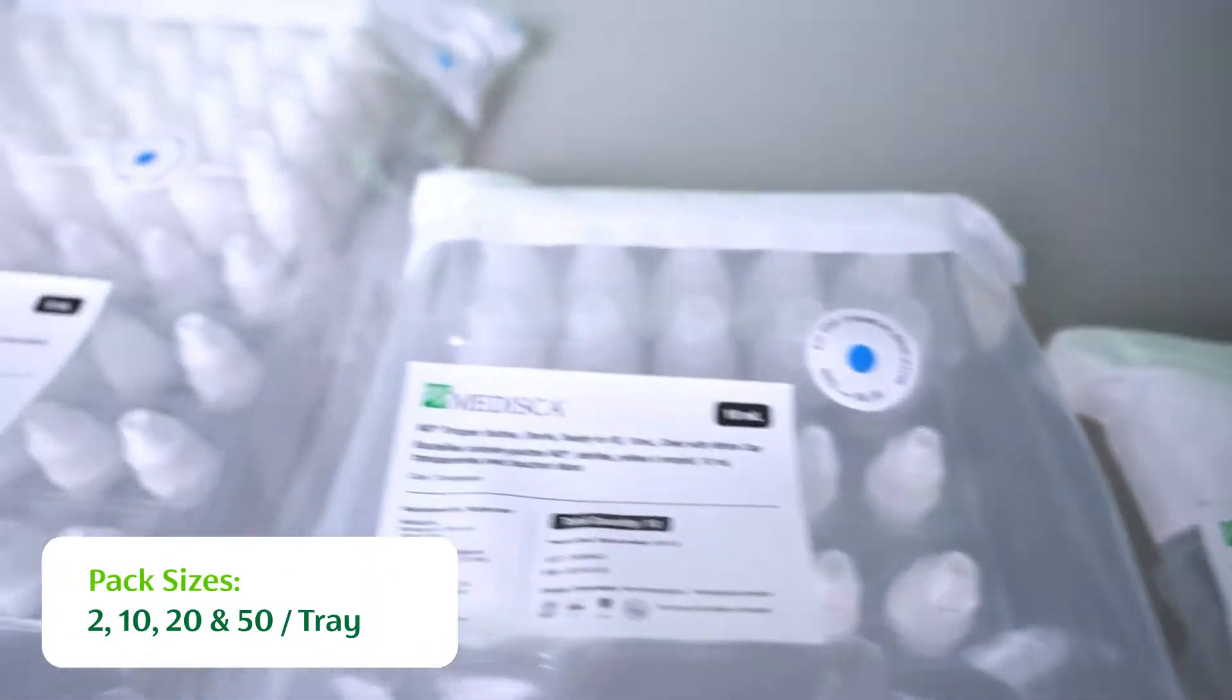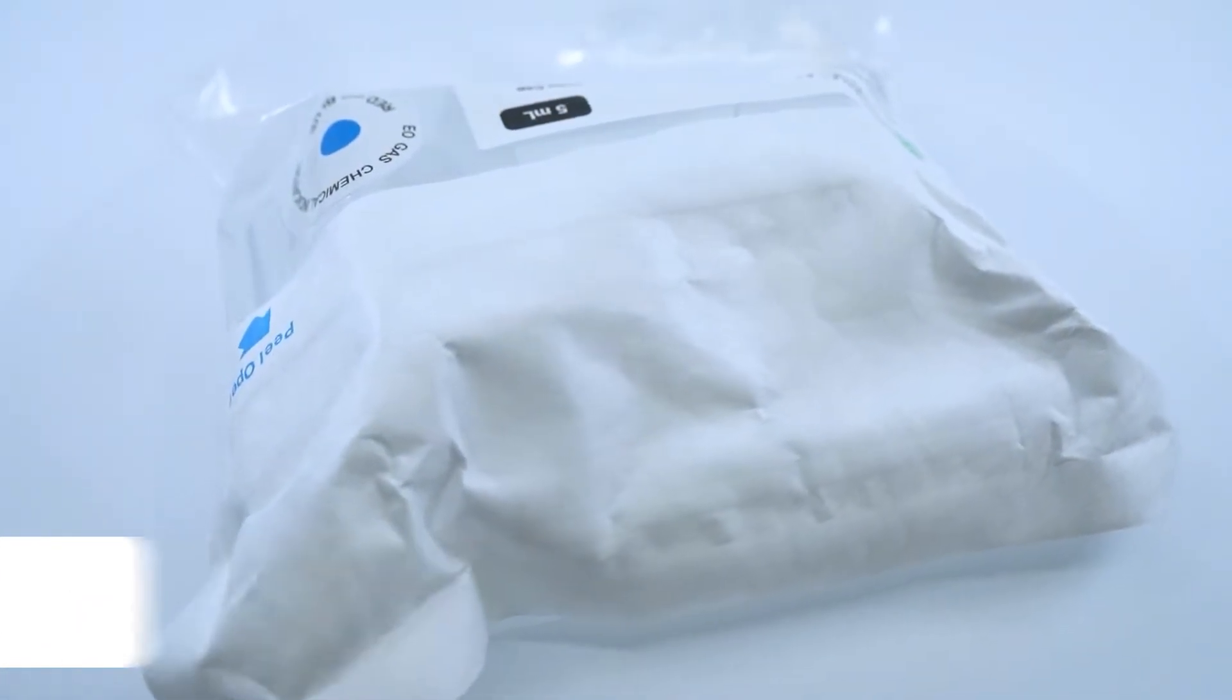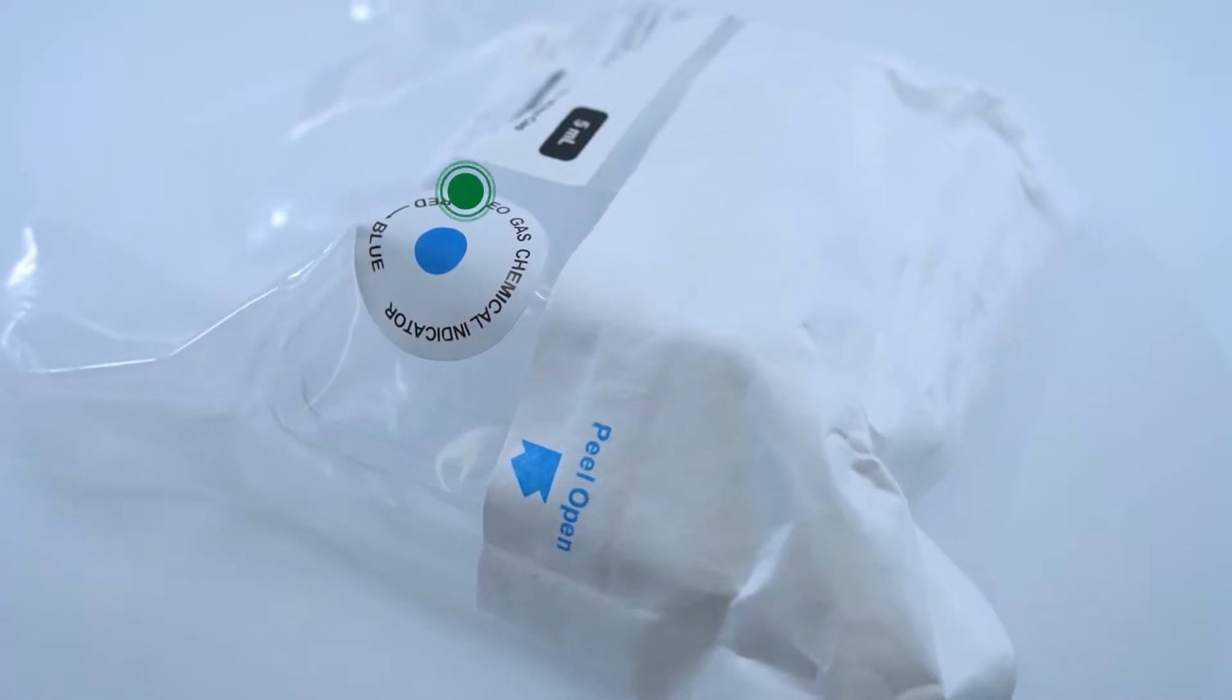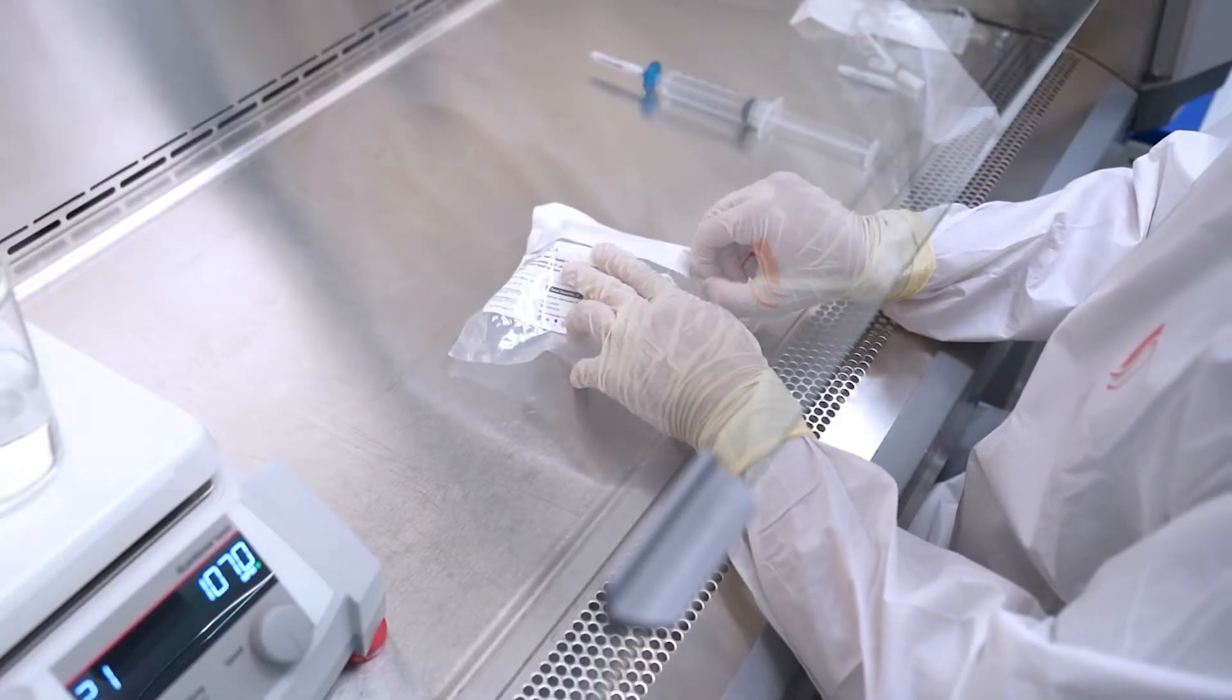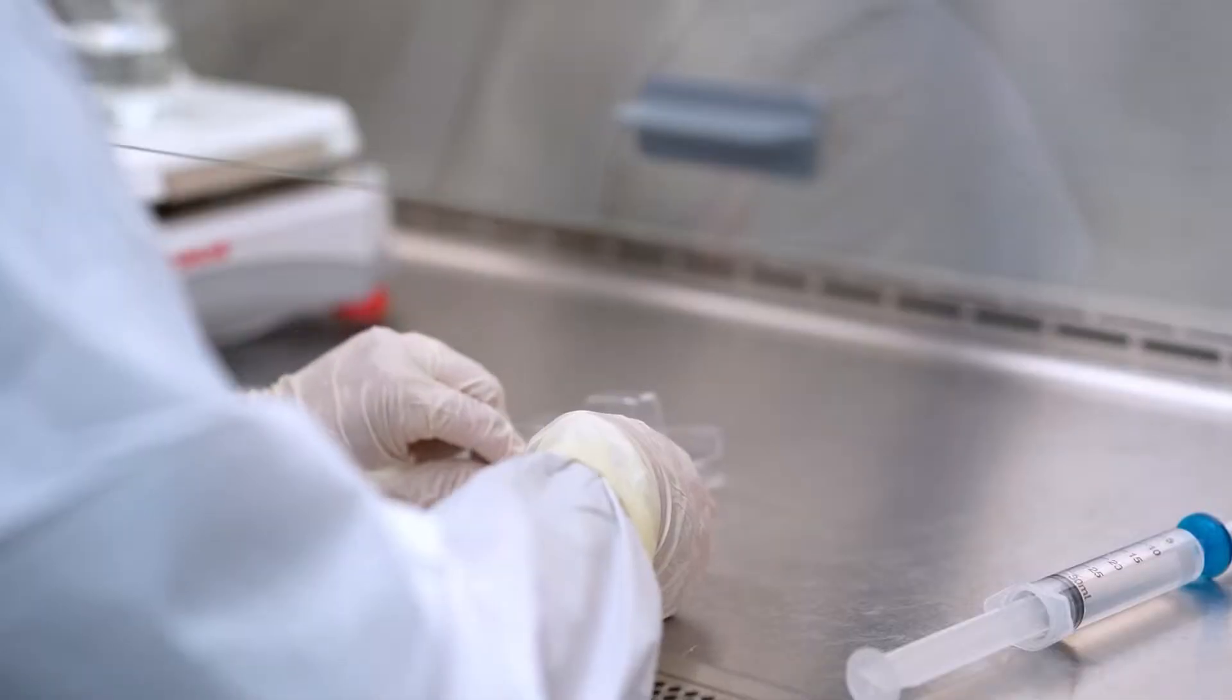Available in four tray pack sizes: 2, 10, 20 and 50. Each tray comes with a single plastic bag with EO sterilized and EO gas chemical indicator. The tear notch in the corner allows for easy opening and use in the sterile environment.